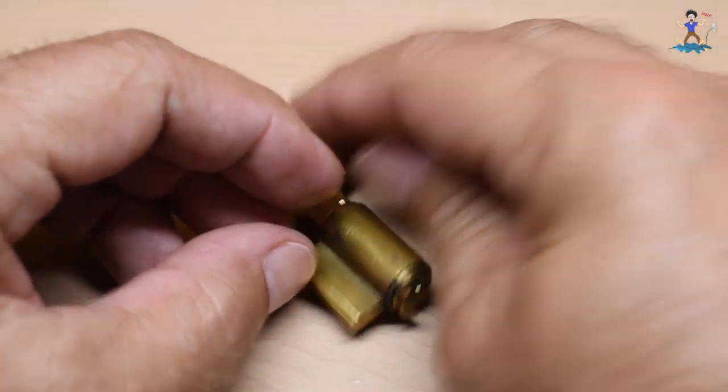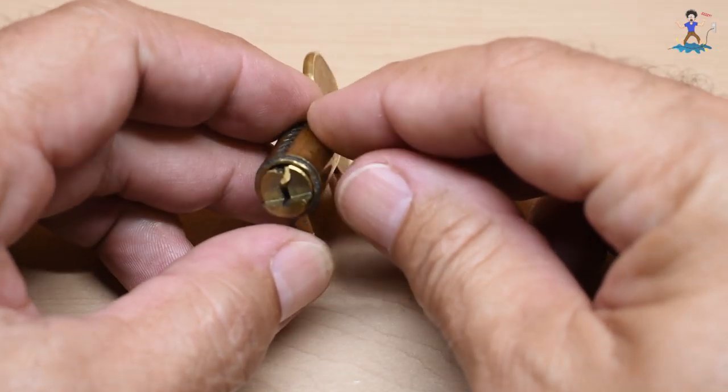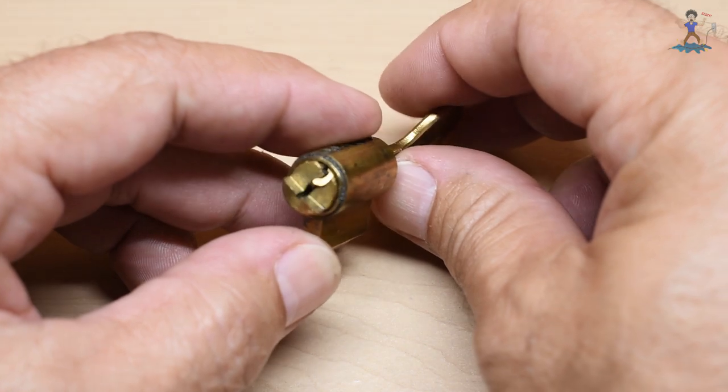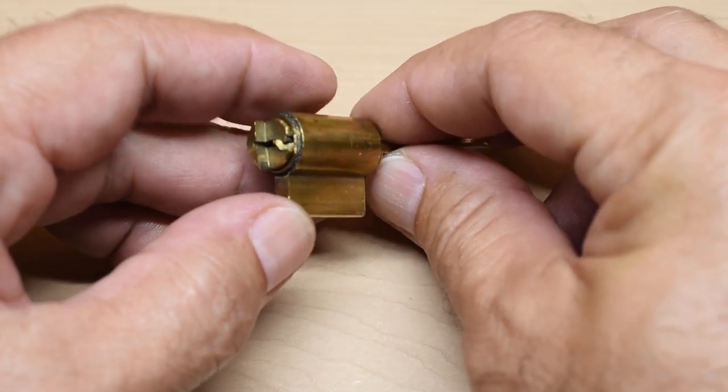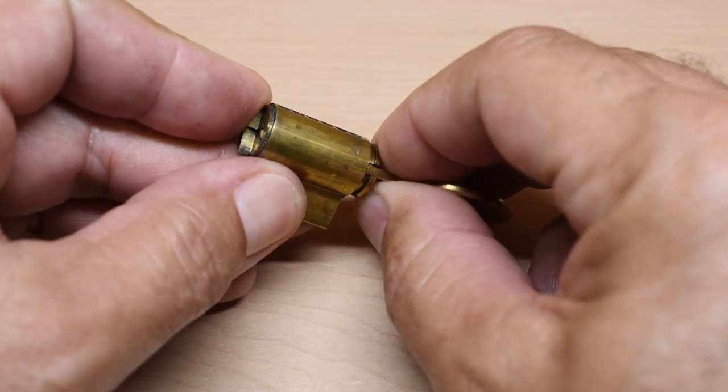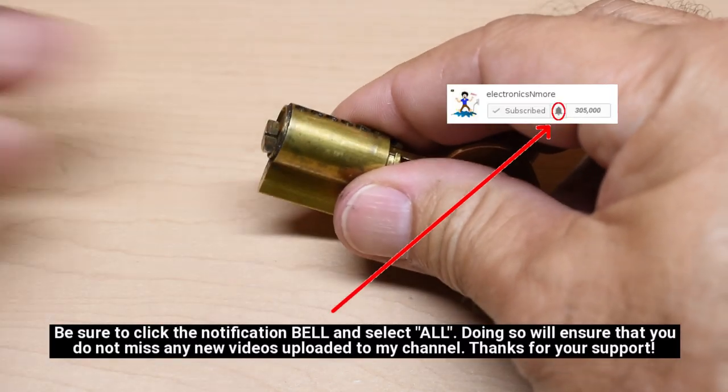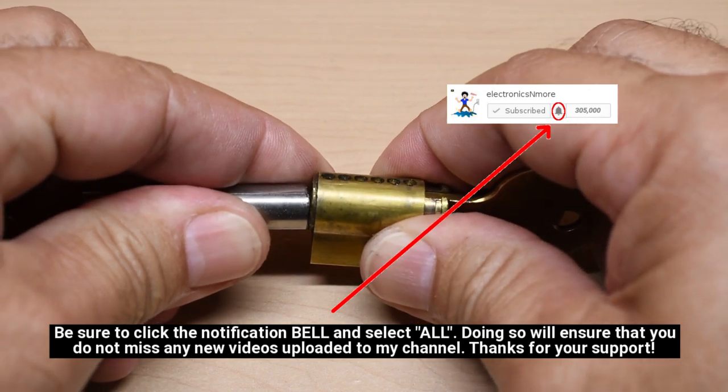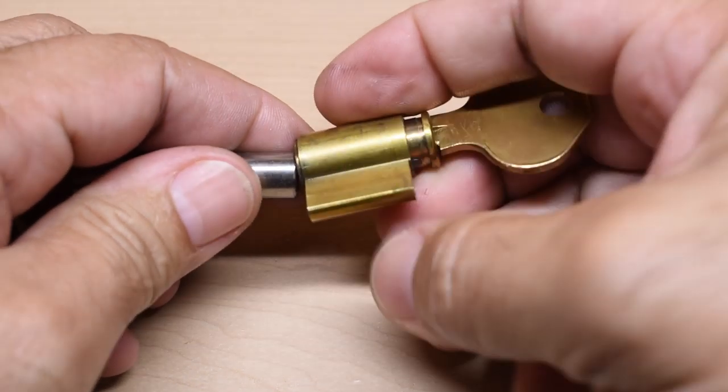To open this on this end there's a flat spot right over here so all I need to do is rotate that to the flat spot and then insert a follower, turn it upright.